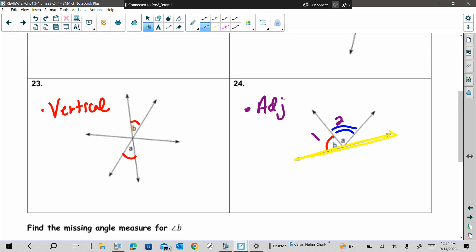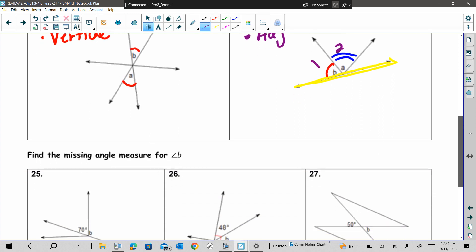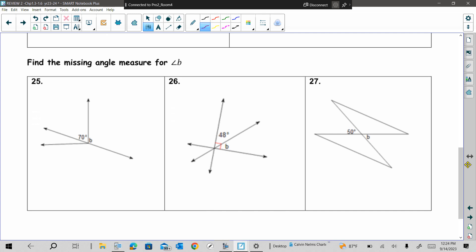Now you're going from naming them to finding the missing angle. On 25 here, I would use this line. All lines have a straight angle - they're all sum of 180. So that has to be 110. How would you do 26? 90 minus the 48. 42. And then 27. They're congruent, vertical, so it's automatic 50 because they're vertical. If you see vertical, they're congruent.